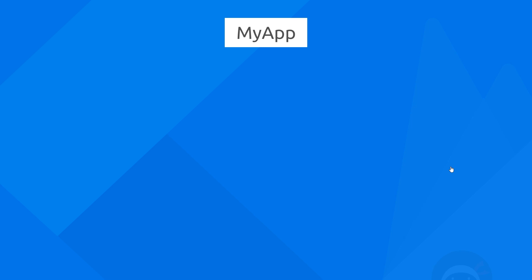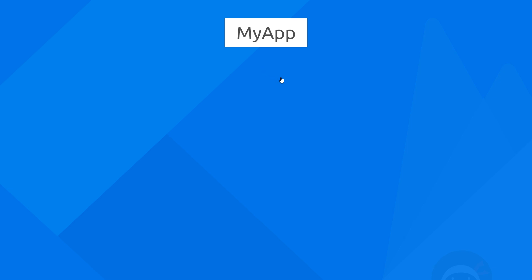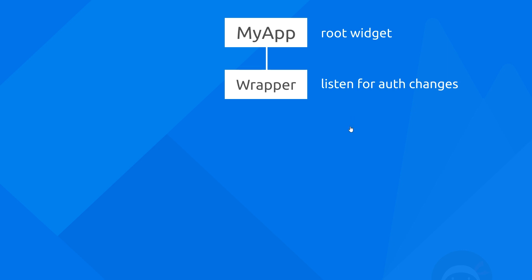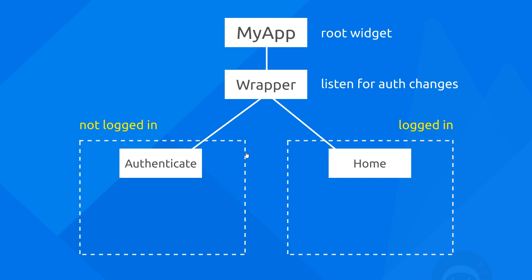There are going to be many ways we could approach this and no one particular way is correct, but the way we're going to be structuring our app is like this: first we've got the root widget MyApp sitting at the top of the widget tree, and beneath that we're going to have a wrapper widget that is going to be actively listening for auth changes — whether a user is logged in or logged out. Depending on the user's authentication status, that wrapper widget is either going to show a home screen or an authentication screen.